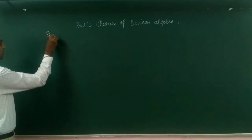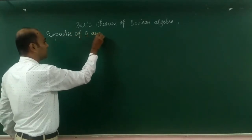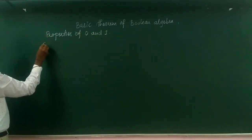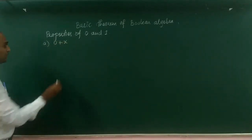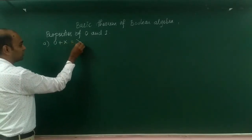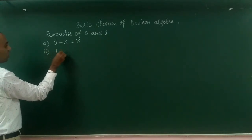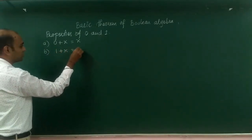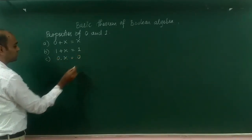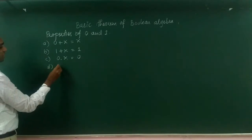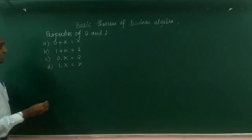Now let us continue with the properties of 0 and 1. The first property A: 0 OR x gives x. Next, B: 1 OR x gives 1. And C: 0 AND x gives 0. Next, D: 1 AND x gives x.